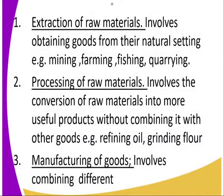We start with the primary ones. Primary involves the extraction of raw materials — obtaining goods from their natural setting. Examples include mining, farming, fishing, and quarrying. These are activities where we are getting raw materials from their natural settings.